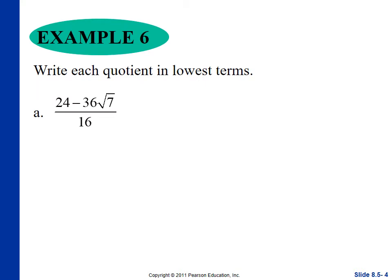So, we're going to write each quotient in lowest terms. The first thing you want to do is look at each of the terms within this expression. We've got 24 and 36 and 16. So, what we want to do is look for the greatest common factor between all three of those terms within this expression.